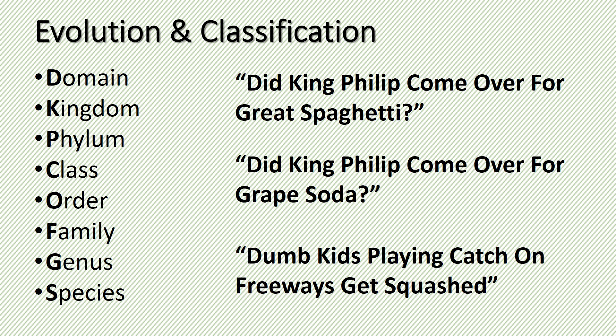Classification is a system that scientists around the world have come up with to name and group organisms based on similarities. When we look at the levels of classification, we have eight levels: domain, kingdom, phylum, class, order, family, genus, and species. As you move down these levels, it gets more specific. Mnemonic devices include 'Did King Philip come over for great spaghetti or grape soda?' and 'Dumb kids playing catch on freeways get squashed.' Remember, the genus and the species are used in naming an organism.